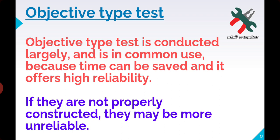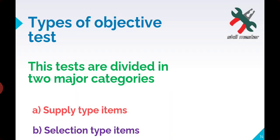If objective tests are not properly constructed, they may become more unreliable. Preparing objective question papers is more difficult than written type tests. If the questions are not prepared with accuracy and proper skill, the test may not yield good performance.